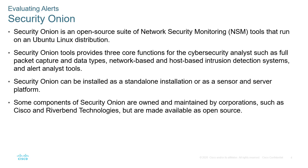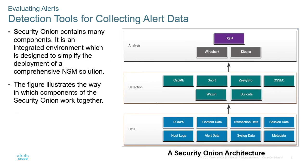The tools in Security Onion are broken up into three main categories: analysis, detection, and data. The data includes things like PCAPs, logs, alert data, metadata, and syslog information. That data is fed into the detection layer. The detection layer may include CapMe, Snort, Zeek, OSSEC, or other detection-based tools. From there it is fed into an analysis-based tool like Wireshark or Sguil. The data feeds the detection, and the detection feeds the analysis.